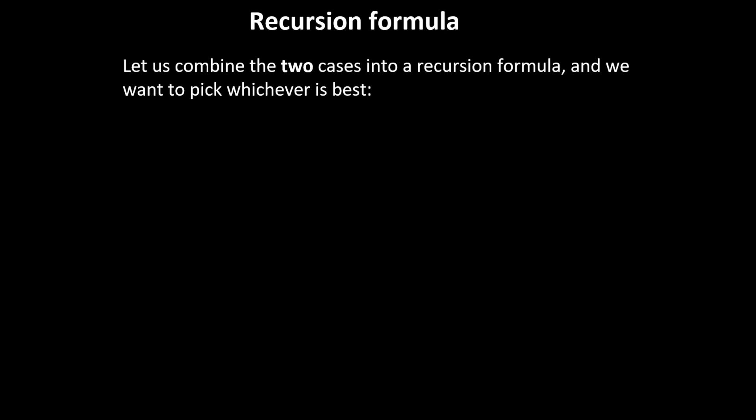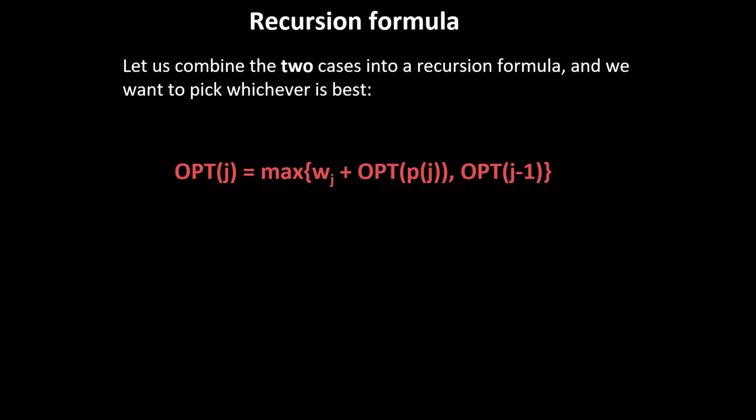Now that we understand p(j) and the two cases, let's combine them into a recursion formula. We want to pick whichever option yields the maximum total weight. So we define OPT(j) as the maximum of: picking job j, giving weight w(j) plus OPT(p(j)) for the remaining non-overlapping intervals; or ignoring job j and taking OPT(j−1). The base case is OPT(0) = 0.